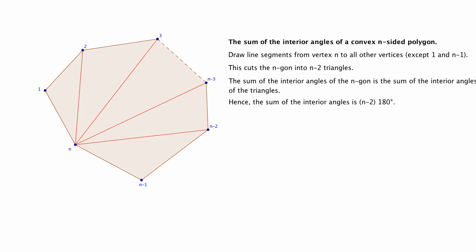Now one thing I forgot to mention was why it has to be convex for the argument to hold. Let me show you. Suppose we were to move vertex number 1 inside this way, so it's no longer convex.